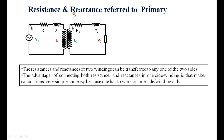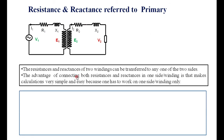Referred to the primary means: the primary is intact, R1 and X1 are intact, and R2 and X2 are brought to the primary side. That is called resistance and reactance referred to the primary side. Now, R2 in the secondary is equivalent to R2 divided by K squared in the primary.